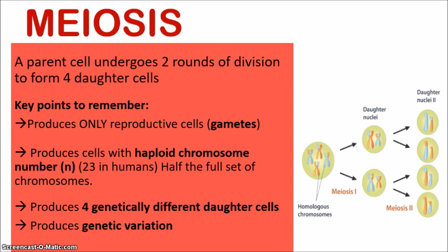There are two rounds of cell division in meiosis, as shown in the diagram. The first round typically involves crossing over, where there is an exchange of genetic information between pairs of homologous chromosomes — that brings about differences. In meiosis 1, the differences are introduced and the chromosome number is halved. Those two cells then divide further to form two more each, giving a total of four daughter cells that are all genetically different from each other and from the parent cell.